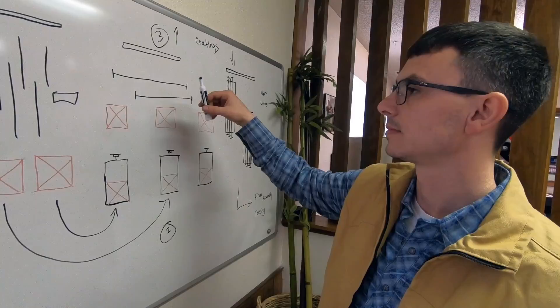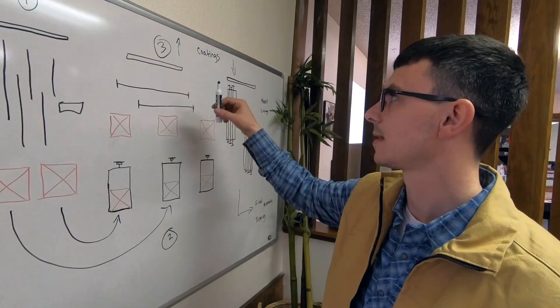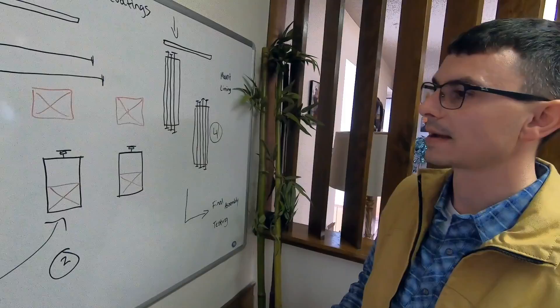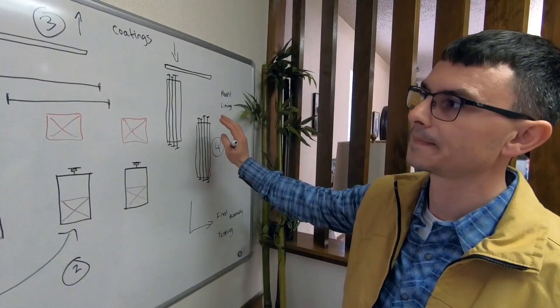Then it comes back to the next bay where we do assembly. So if there's a rack that has to go on, or a skid, this is where we're doing the rough mounting. So we're not doing the fine-tuning, but we're getting it close. And then we'll do the lining. Like on the project we're doing right now, we're doing an internal lining. So that's where we'll do this internal lining.